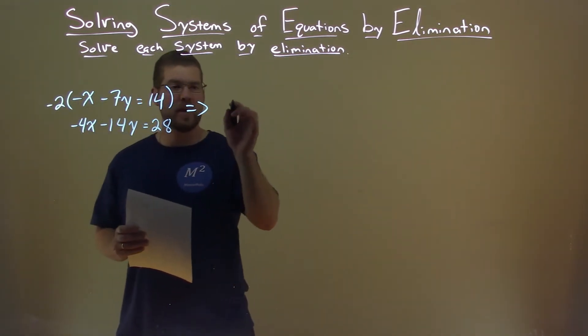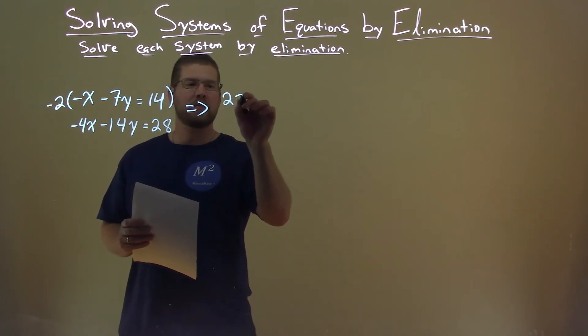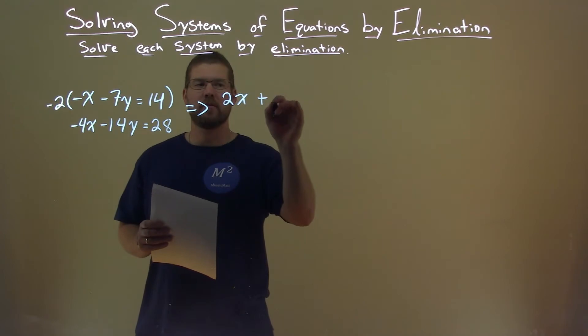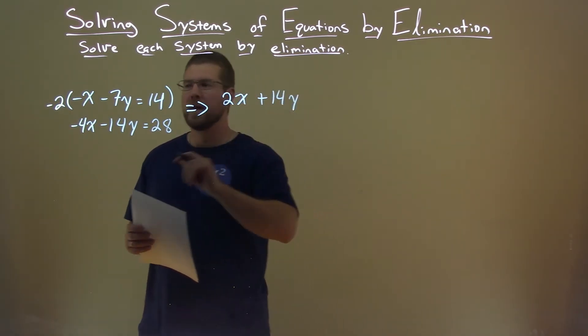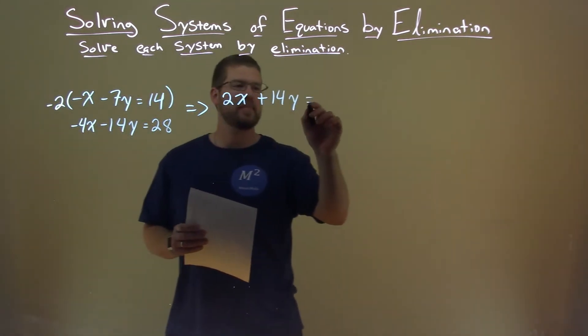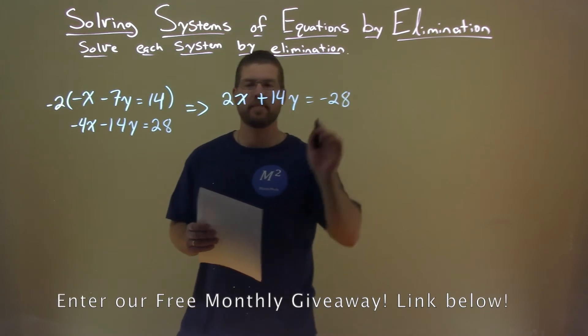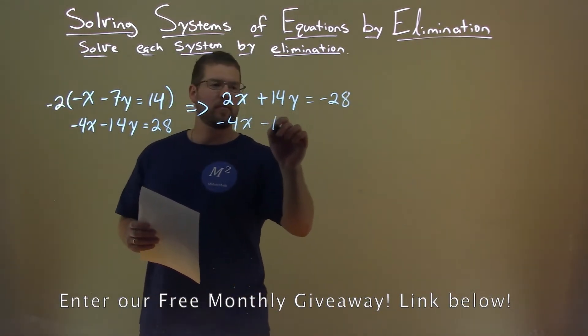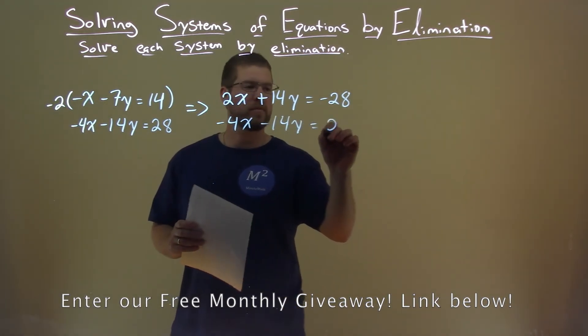Negative 2 times negative x is a positive 2x. Negative 2 times a negative 7 is a positive 14y. Negative 2 times 14 is a negative 28. Second equation just comes over minus 4x minus 14y equals 28.